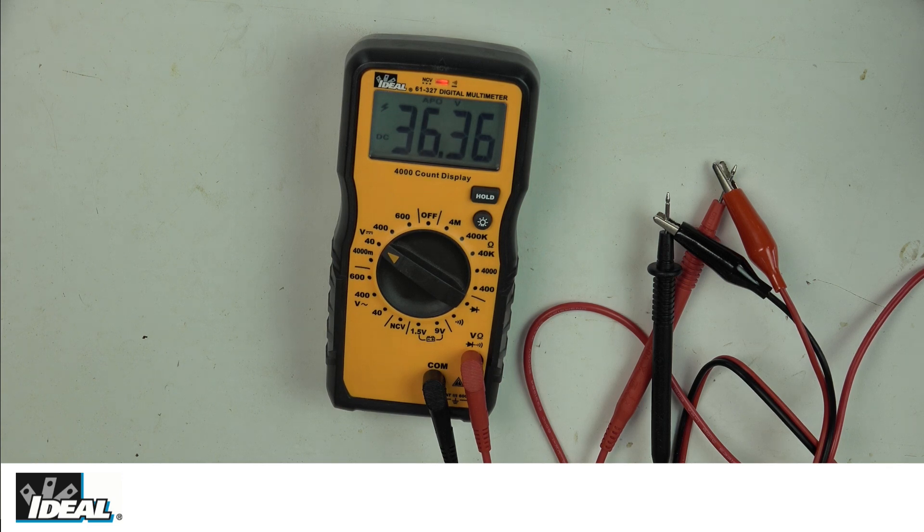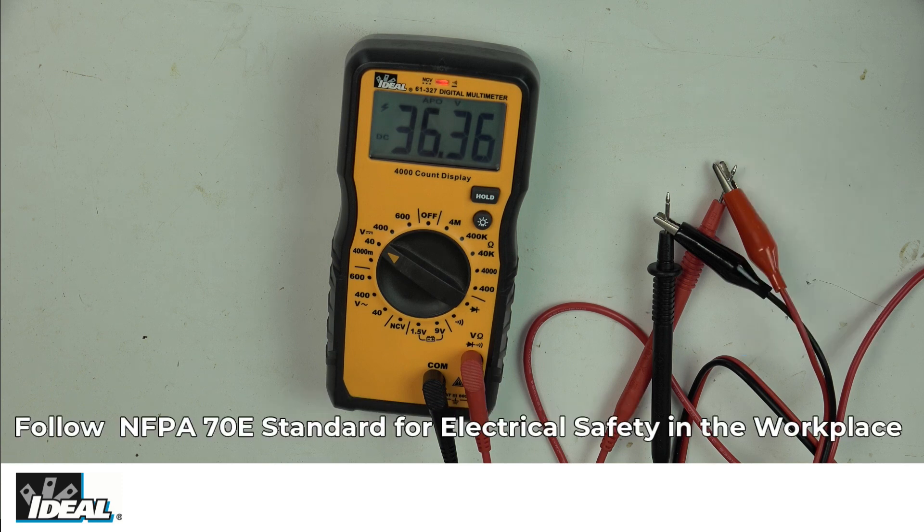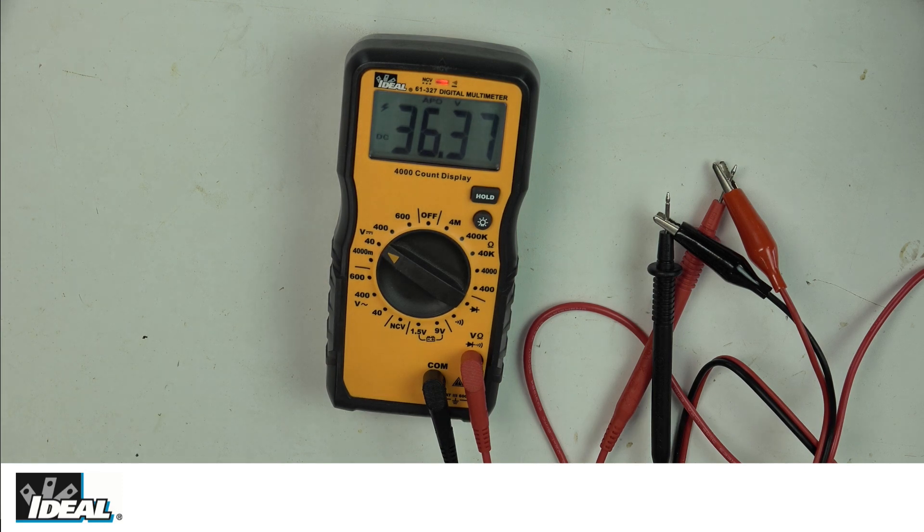Above 30 volts, depending on the environment you're doing your testing in, whether it's Cat 2 or Cat 3, personal protective equipment may be required and if so, you should be wearing it. Anytime you're working with electrical circuits, following good industry safety guidelines is always a good idea.